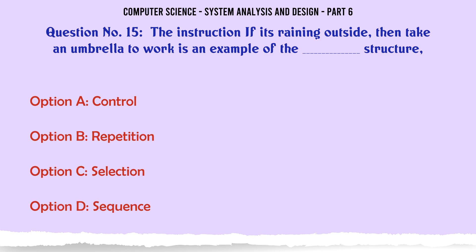The instruction 'if it's raining outside then take an umbrella to work' is an example of the structure: A. Control, B. Repetition, C. Selection, D. Sequence. The correct answer is: Selection.